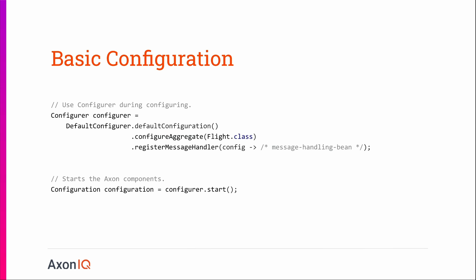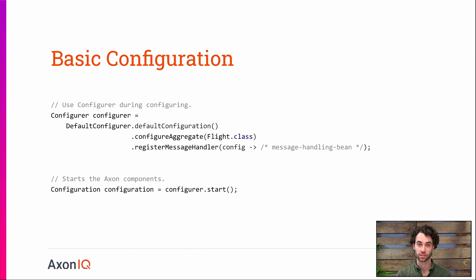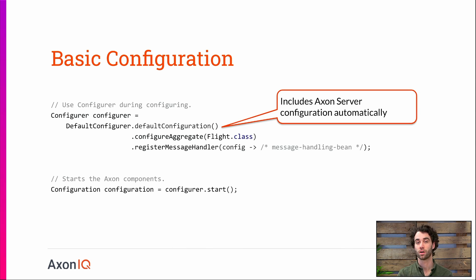From here on out, we can look at how we would configure our application. We would use a Configurer. The Configurer dictates that you want to configure your application. On this Configurer, you could register your aggregate through a class as you see here, and you could register message handlers to the configuration as well. Once you are done, you can start the Configurer, which means you'll get a Configuration. With the Configuration, you have access to all the infrastructure components Axon provides — so it is your entry point into getting the command bus, for example, or seeing the configuration of your aggregate. There is one thing we don't see here, and that's how to configure Axon Server, because it is automatically included in the Configurer. As soon as you have the Axon Server connector dependency on your class path, it is automatically included, and you don't have to do anything there, making your life a lot easier.